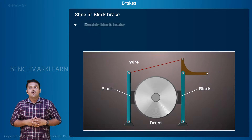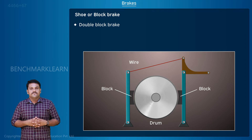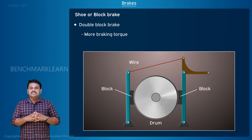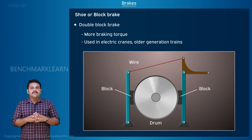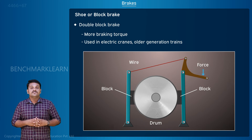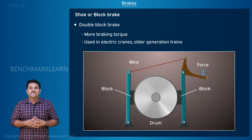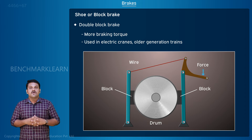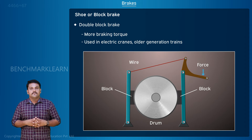In a double block brake, two opposing blocks are used, which increases the braking torque. This type of brake is used in electric trains and in older generation trains. The shoe or block is made of materials softer than the drum, because the block is easier to replace than the drum.